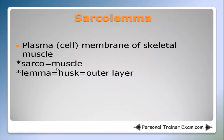This leads us to what the sarcolemma is. The sarcolemma is the plasma membrane of skeletal muscle. To help you remember this term: sarco again means muscle, and lemma means husk — think husk of corn — the outer layer of the cell, which provides a protective barrier between the interior of the cell and the extracellular fluid.